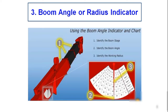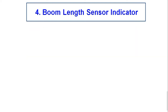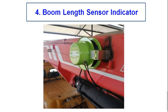The third safety device is the boom angle indicator. Boom angle indicators are normally mounted on the back side of the boom where they can be easily read by the operator. They are used as a quick reference for the operator to know what angle the boom is at, and are designed to improve the operator's ability to detect tip-over situations.